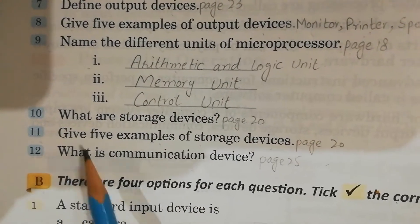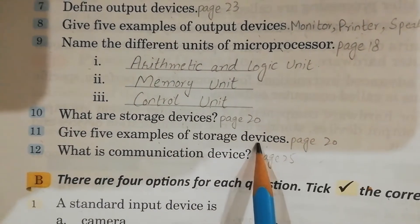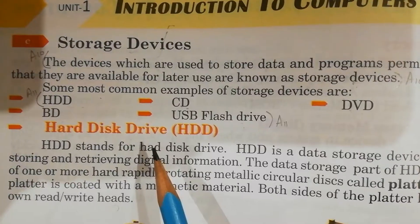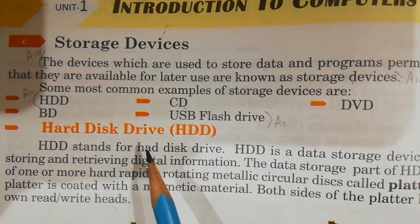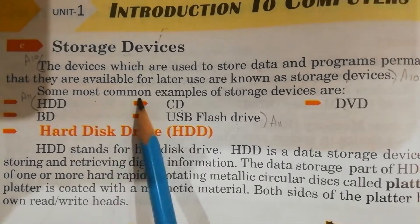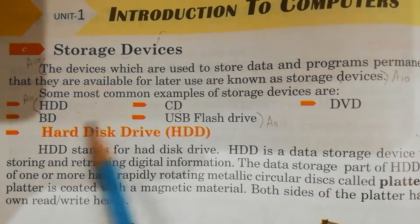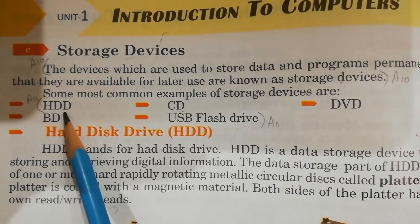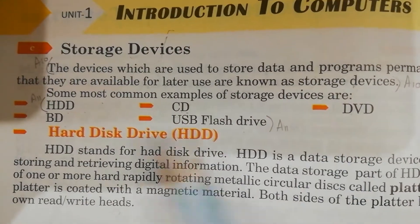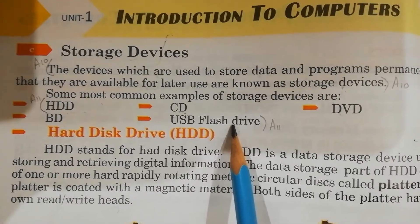Question No.11: Give five examples of storage devices. Again its answer is on page No.20. Some most common examples of storage devices are: HDD, CD, DVD, BD, and USB flash drive.